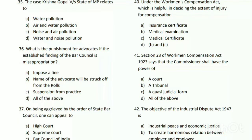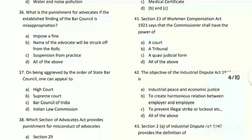Question number thirty-six: what is the punishment for advocates if the Bar Council finding is misappropriation? The answer is D - all of the above: A - impose a fine; B - the advocate's name will be struck off from the roll; and C - suspension from practice.